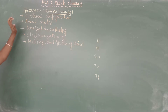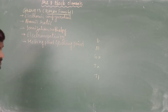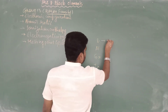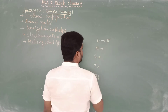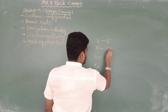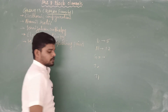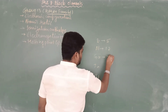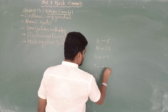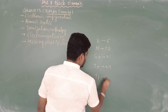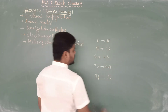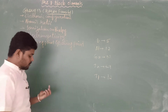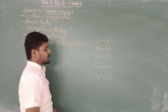Let's look at the general properties of group number 13 elements. First we will start with the electronic configuration. The atomic number of boron is 5, aluminium is 13, gallium is 31, indium is 49, and thallium is 82.